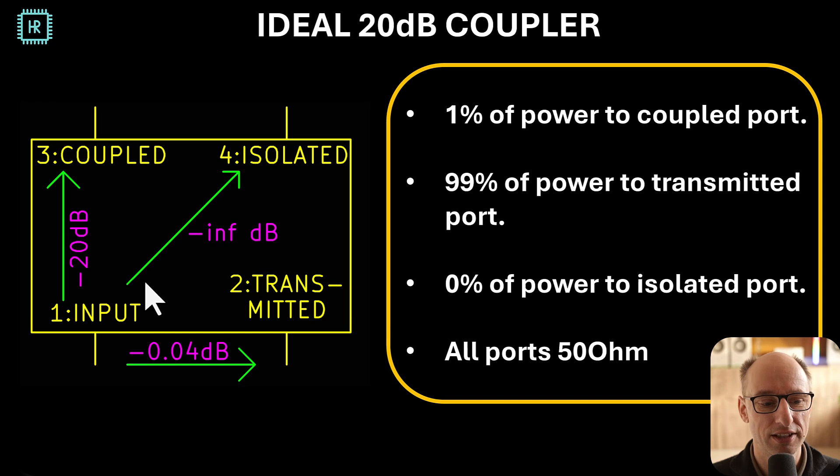So let's have a look at what a coupler looks like. On the left here we see the symbol. Normally on the input the signal comes in and at the transmitted output the signal comes out. We have a coupled port that receives a small portion of the input signal and an isolated port that ideally receives nothing. So let's do some basic math here. A 20 dB coupler means that one percent goes to the coupled port. So if one watt goes in here, 10 milliwatts comes out here.